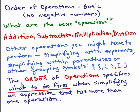So the order of operations — what does that mean? It specifies what to do first when simplifying an expression that has more than one operation. For instance, there might be parentheses, there might be an addition, but there also might be a multiplication.